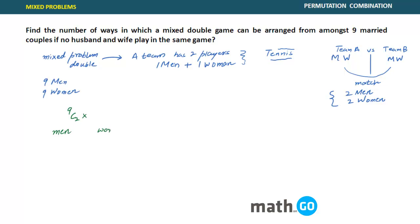Now talking about woman selection. Out of nine women, two cannot be selected. Why? Because if I've selected M1 and M2, I cannot select W1 and W2, as that would mean wives are playing with their own husbands again. So I cannot select W1 and W2, leaving only seven options. That means for women, you have 7C2 options.